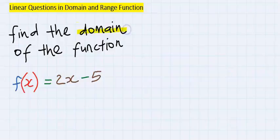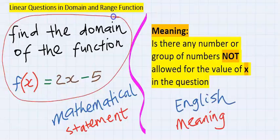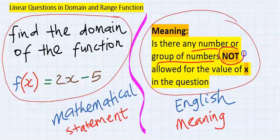In this question we have to find the domain of this function. To solve this problem, the first thing is to understand the mathematical meaning of this question and what you are expected to do. The English meaning is: is there any number or group of numbers not allowed for the value of x in this question?